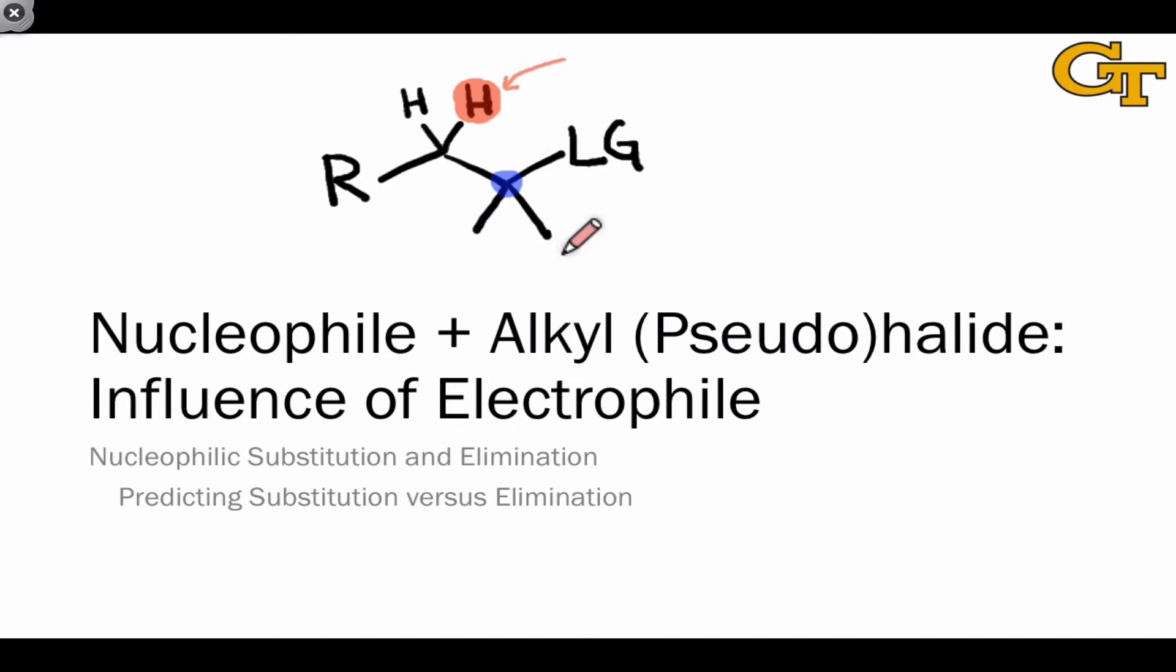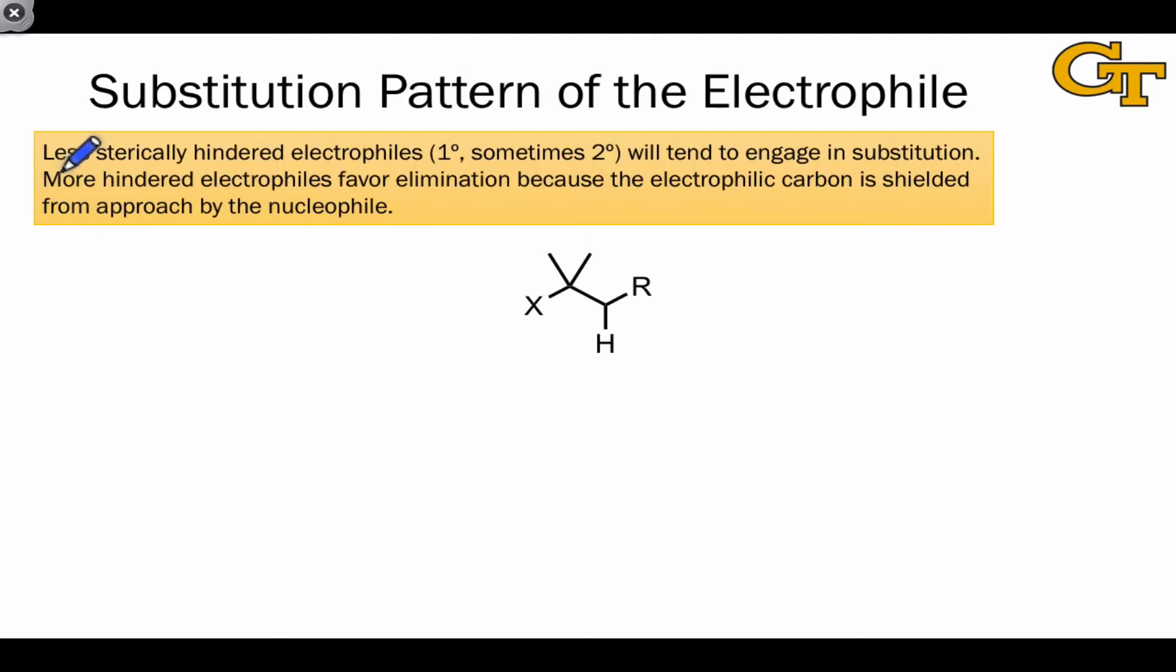There aren't as many steric clashes to worry about here. And so the point in general is that less sterically hindered electrophiles, primary especially, and sometimes secondary, tend to engage in substitution. More hindered electrophiles, such as tertiary substrates, tend to favor elimination, especially in the presence of strong bases, because the electrophilic carbon is shielded from approach by the nucleophile.